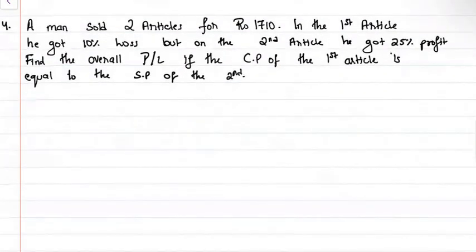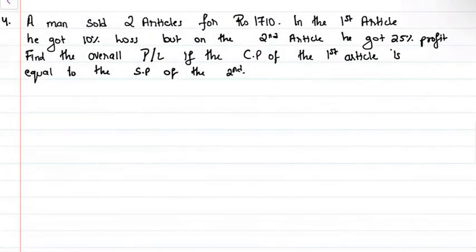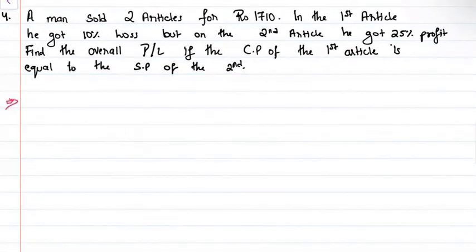Next question: A man sold two articles for Rs.1710 in total. In the first article he got 10% loss, but on the second article he got 25% profit. Find the overall profit or loss, given that the cost price of the first article is equal to the selling price of the second article. For the first article, 10% loss means 10% equals 1 by 10, so cost price is 10 and selling price is 9.